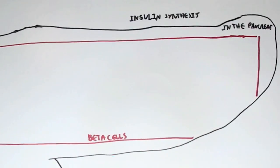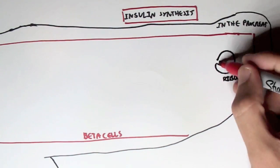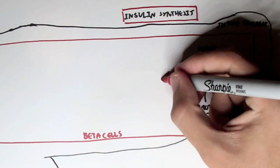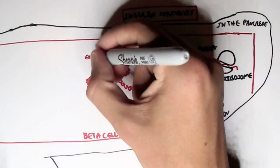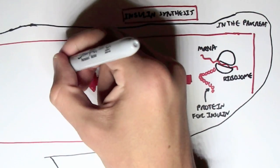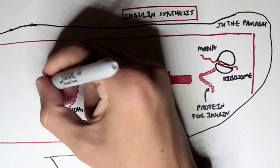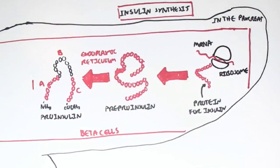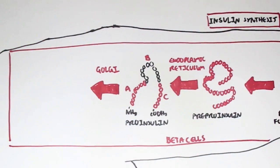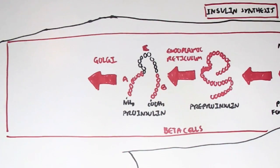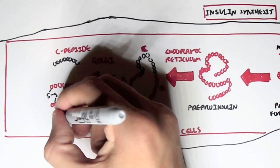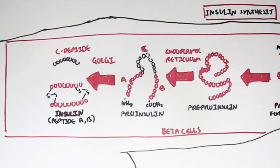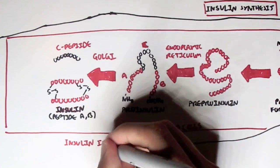Insulin synthesis occurs particularly in the beta cells of the pancreas, because it is within these beta cells that insulin is secreted. We begin with the ribosome, which translates mRNA into a protein for insulin. This protein forms what's called pre-pro-insulin, a long polypeptide, which is transported into the endoplasmic reticulum where it is cleaved to form pro-insulin. Pro-insulin consists of three segments: A, C in the middle, and B. It then travels to the Golgi apparatus where it is cleaved into the C peptide and the A and B peptides, which form insulin.